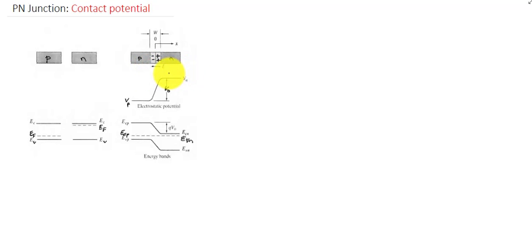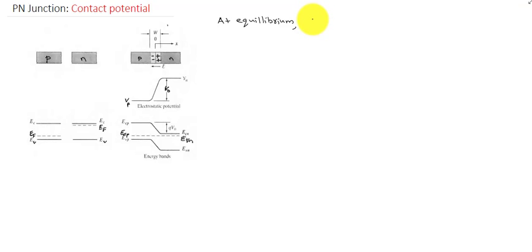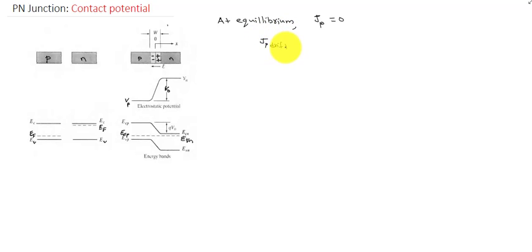As we discussed in the previous lecture, at equilibrium condition the total current in a semiconductor will be zero — the net current will be zero whether it is due to electrons or due to holes. Here we are considering the case of holes, so JP will be equal to zero at equilibrium. JP means JP drift plus JP diffusion equals zero.